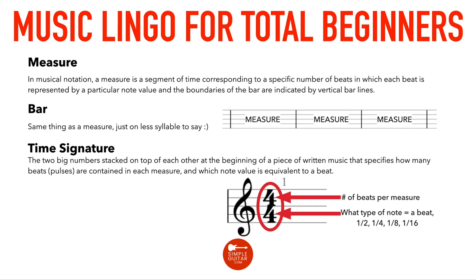We'll talk more about that later, but that is a basic rundown of what time signature is. 'Meter' is actually the same thing as time signature — it's just easier to say. A lot of experienced musicians say 'meter' more than 'time signature.' So the meter of a song in four-four means four beats per measure and the quarter note gets the beat.